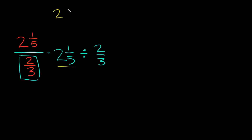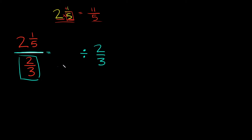So we have two and one-fifth. To change this into an improper fraction, we multiply the whole number and denominator, then add the numerator. Five times two is ten, and ten plus one is eleven — that's your numerator — and the denominator stays as five. So two and one-fifth equals eleven over five. I'm going to replace the two and one-fifth with eleven over five.